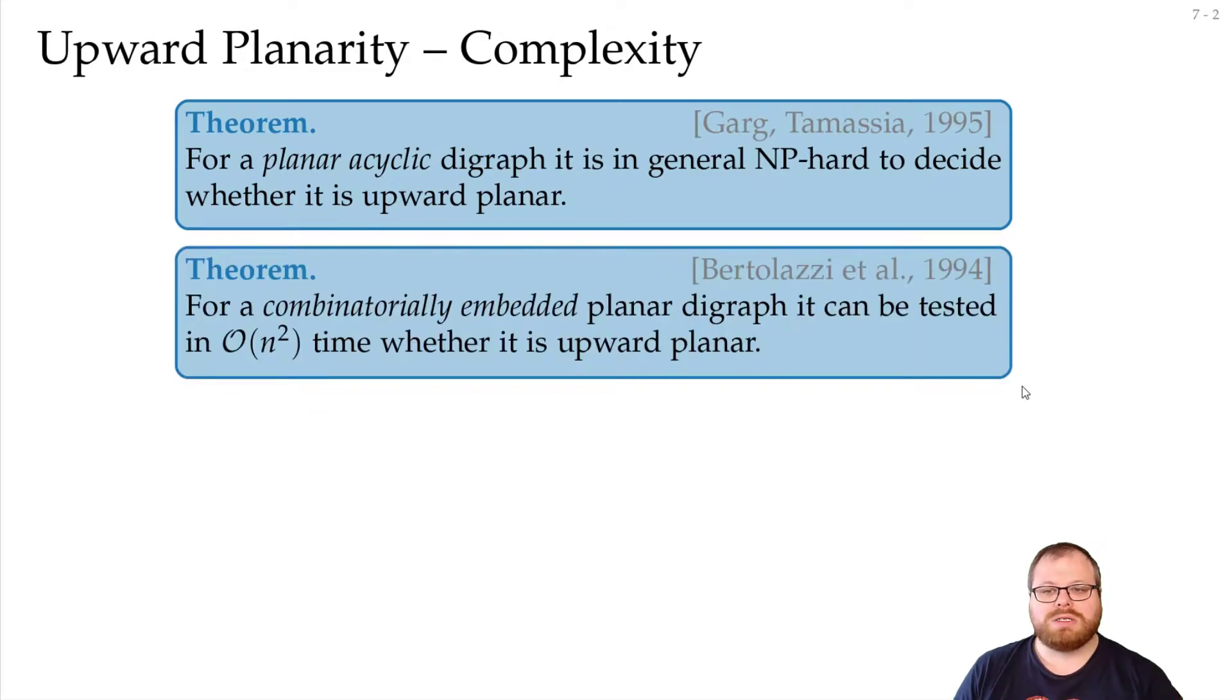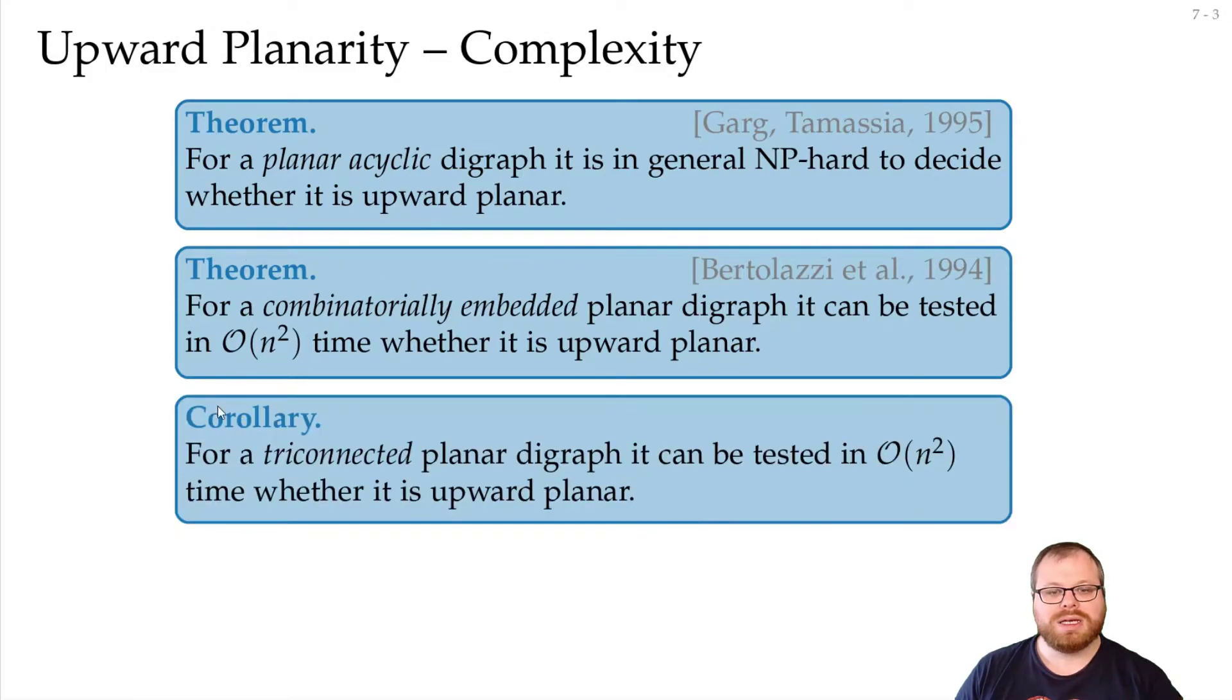On the other hand, Bertolazzi et al. showed in 1994 that if we also have a combinatorial embedding, then we can test it in order n-squared time. Since every three-connected planar graph has a unique combinatorial embedding, that means that for tri-connected planar digraphs we can also test it in order n-squared time.